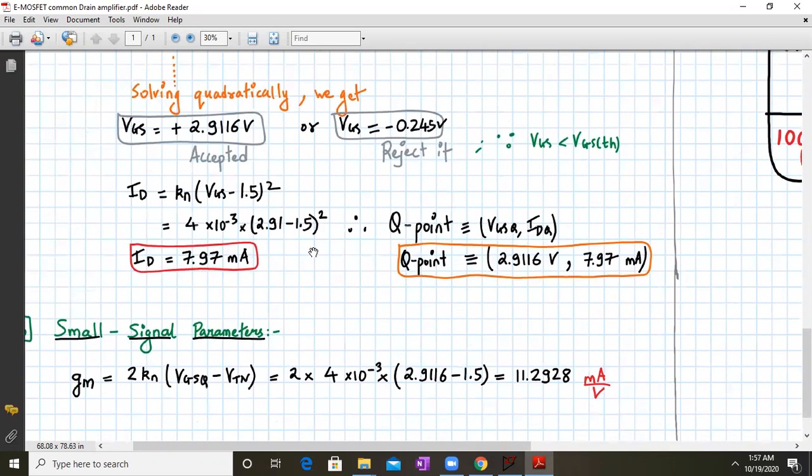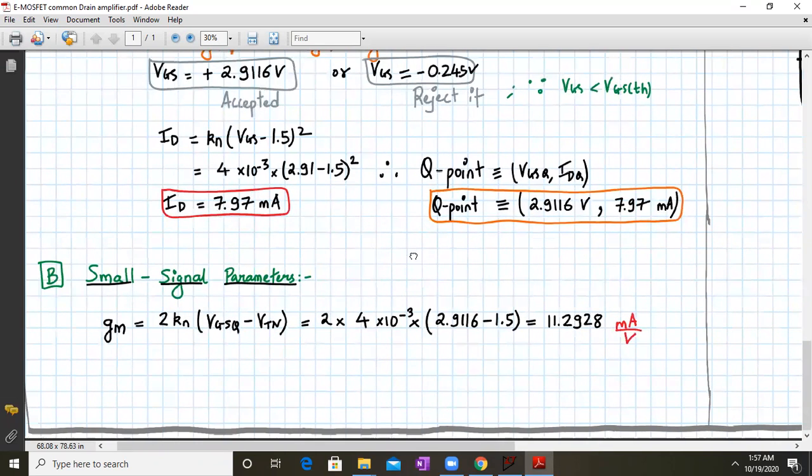The Id value is given by Kn times (Vgs - 1.5)². Substituting Vgs = 2.91 volts, we get Id = 7.97 milliamperes. Therefore, the Q-point (Vgsq, Idq) is (2.9116 volts, 7.97 milliamperes).